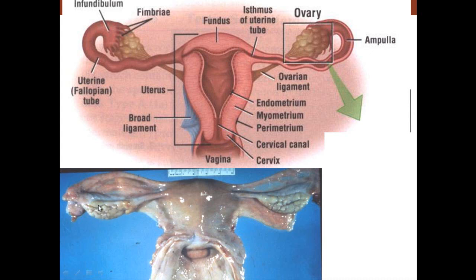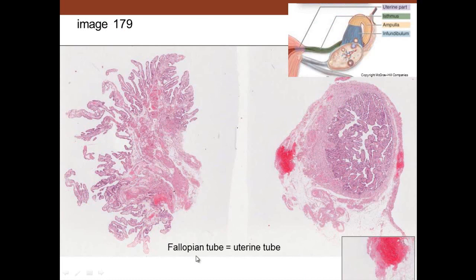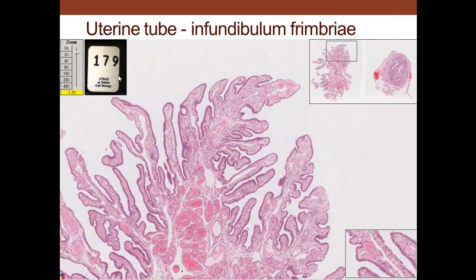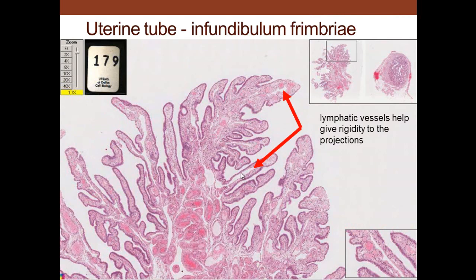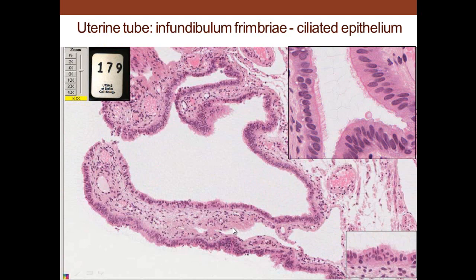From the ovary you have the infundibulum, the ampulla, and the isthmus leading to the uterus — the uterine tube is synonymous with the fallopian tube. Here we see the fimbria projections, little finger-like projections that cover over the ovary, catch the egg, and coat the egg. The cilia on these cells beat to set up a flow to bring the egg inside. Large lymphatics run through there to help make these projections more rigid.